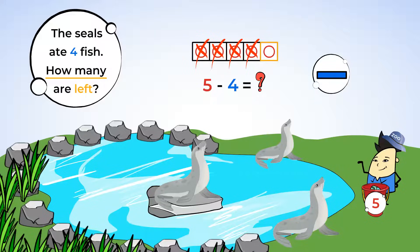Just one. That means that there is only one fish left for the seal to eat because five minus four equals one. Let's write that down. Great job.